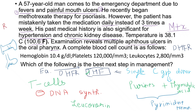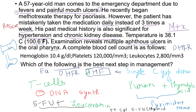Leucovorin is given following high-dose methotrexate as part of the chemotherapeutic plan, serving as rescue therapy — it rescues the bone marrow and gastrointestinal mucosa. When used in combination with 5-fluorouracil, it potentiates the cytotoxic action of 5-FU by binding to thymidylate synthase. It is frequently included in the treatment of colorectal carcinoma.